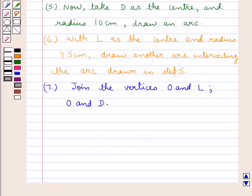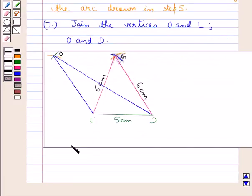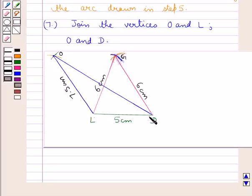Now we join the vertices O and L, and O and D. So we have joined the vertices O and L, and O and D, where OL is 7.5 cm and OD is 10 cm.